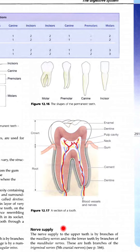Nerve supply: The nerve supply to the upper teeth is by branches of maxillary nerves and to the lower teeth by branches of mandibular nerves — जो upper teeth होते हैं उनको maxillary nerves supply करती हैं, और जो lower teeth होते हैं उनमें mandibular nerves होती हैं। These are both branches of the trigeminal nerves — ये दोनों nerves, maxillary और mandibular, trigeminal nerves की branches होती हैं।